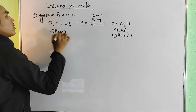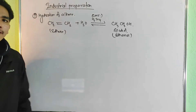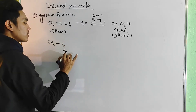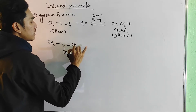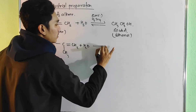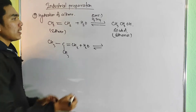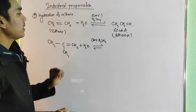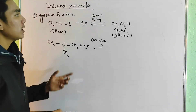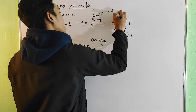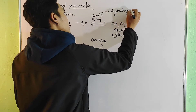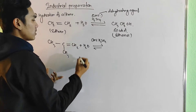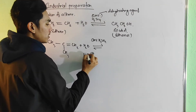Ethene plus water, in the presence of concentrated H2SO4 as a catalyst, which also acts as a dehydrating agent, gives ethanol. For unsymmetrical alkene, we also use concentrated H2SO4 as a catalyst and dehydrating agent.